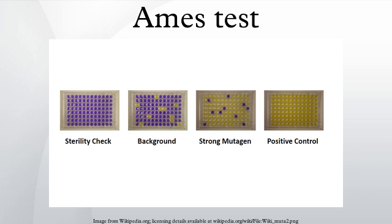The Ames test uses several strains of the bacterium Salmonella typhimurium that carry mutations in genes involved in histidine synthesis. These strains are auxotrophic mutants — that is, they require histidine for growth but cannot produce it.